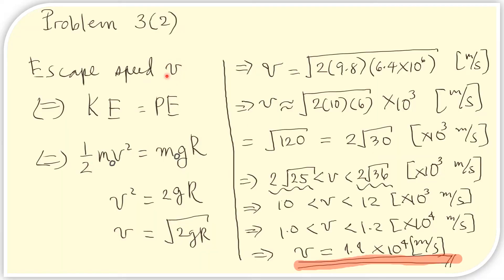We now compute for the escape speed V. The kinetic energy is given by one-half M sub O times V squared. The gravitational potential energy is related to the distance from the center of the Earth to its surface, given by R from problem 3.1. After manipulation, we substitute the values of G, M, and R. Because we are using SI base units, the final unit will be meters per second.